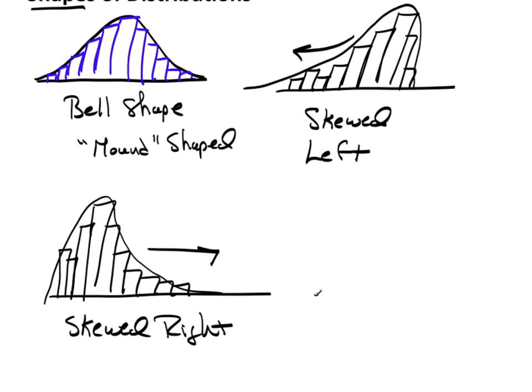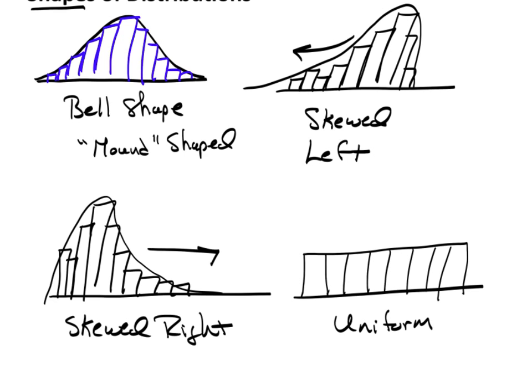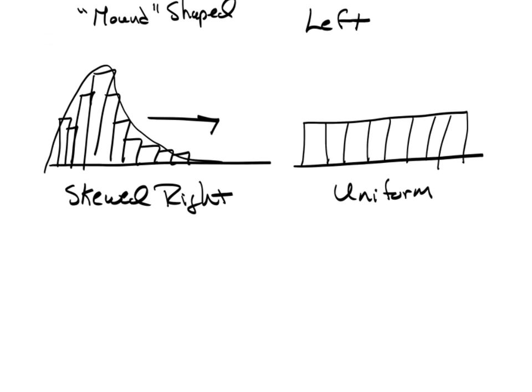Now a uniform distribution in theory looks like this, where there's no variation. It's just uniform all the way across. Now in reality, unless you make up data, you never see a distribution that's perfectly uniform.